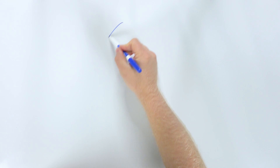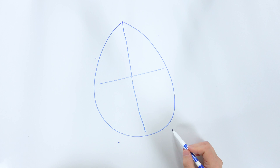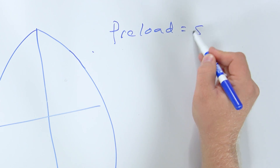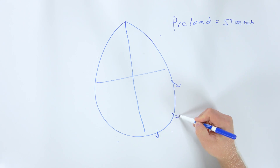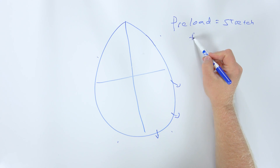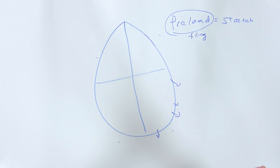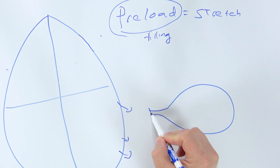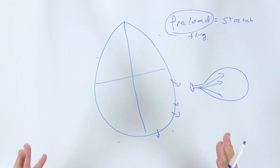To understand preload and afterload, I'm going to draw a little heart. It's not fancy, but this is basically a heart — we've got our four chambers, our atria on top, our ventricles on bottom. Let's talk about preload. I want you to think of preload as a stretch. Preload is the stretch that occurs on the ventricles while they're filling during diastole. As those ventricles fill, they stretch — that stretch is what we refer to as preload. Think of it like a balloon: when you're filling up a balloon, that's your preload.